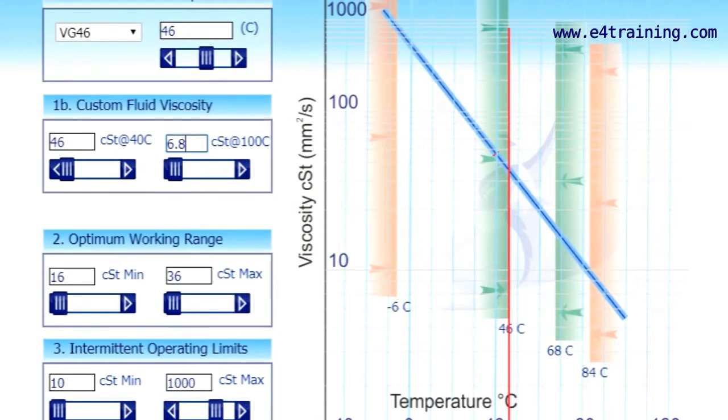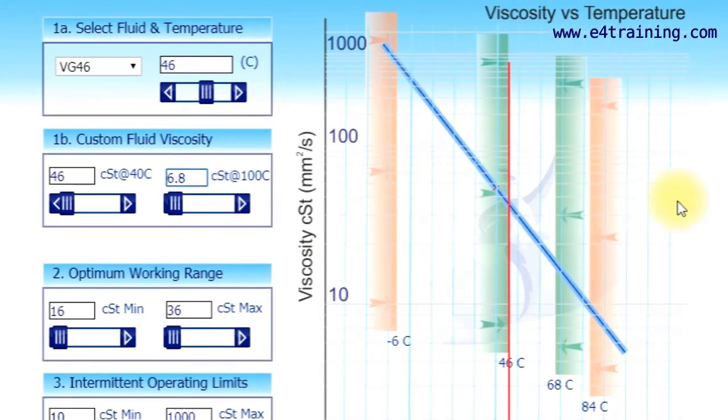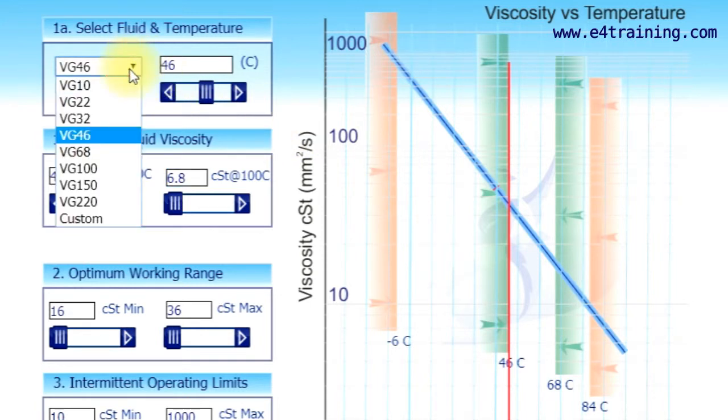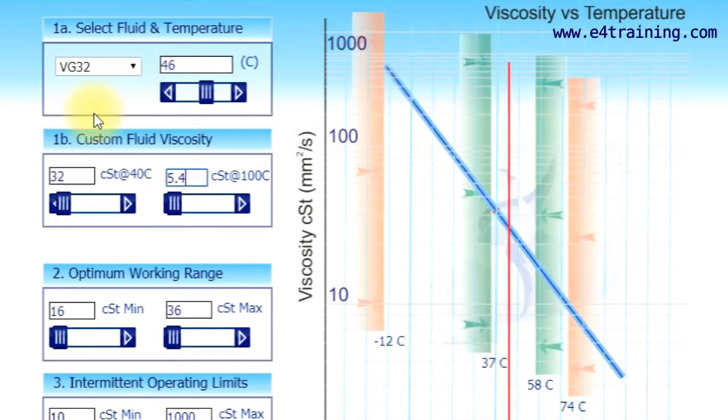We have at the top a selection system so we can select a particular fluid we want to look at, and that changes all our values. We've got our temperature scale here that shows what point we're operating within our systems. We've set our coolers too.